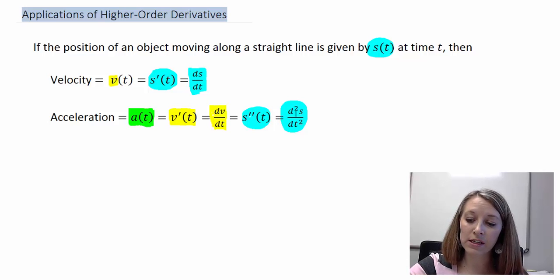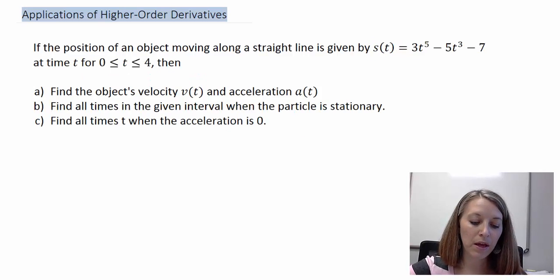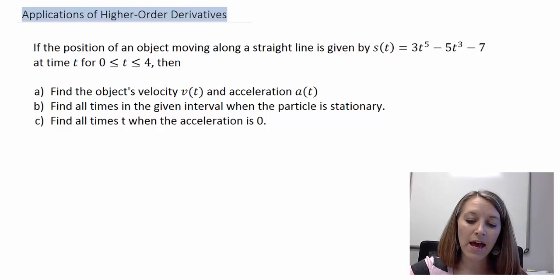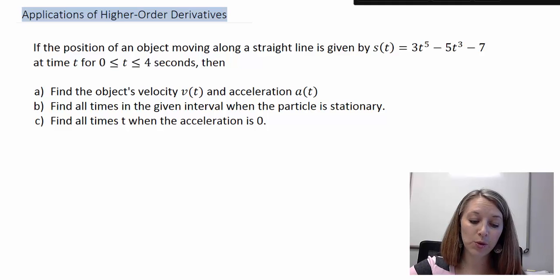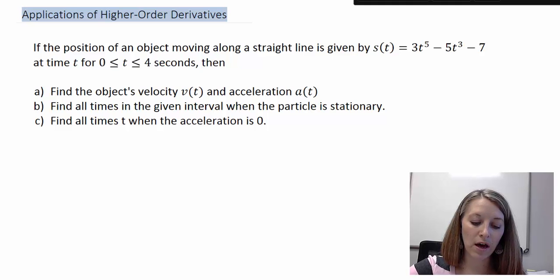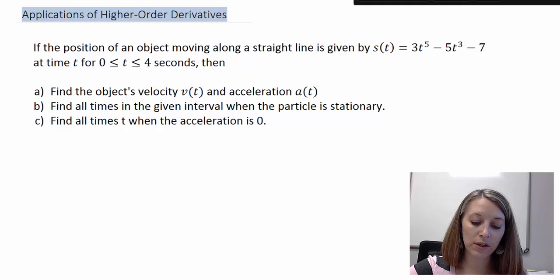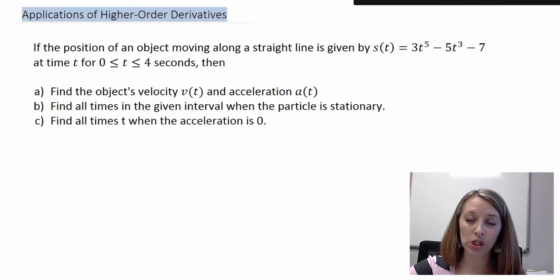Let's look at an example. If the position of an object moving along a straight line is given by s of t equals 3t⁵ minus 5t³ minus 7, at time t where t varies between 0 and 4 seconds, we want to: find the object's velocity and acceleration, find all times in the given interval where the particle is stationary, and find all times t when the acceleration is 0.